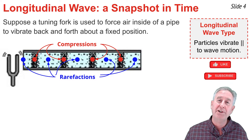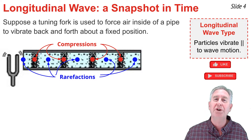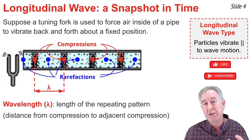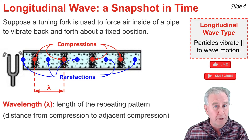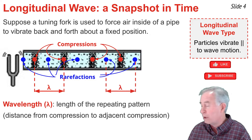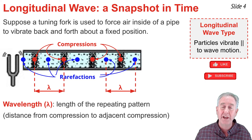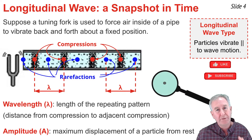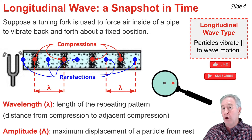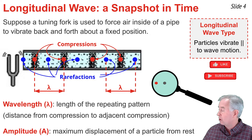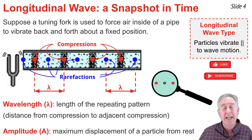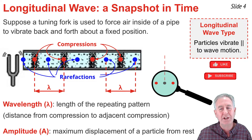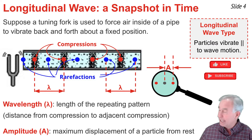It's this pattern of compressions and rarefactions that moves through the pipe. To determine the wavelength, measure the length of the repeating pattern — from one compression to the next adjacent compression, or from one rarefaction to the next. The amplitude is the maximum displacement a particle makes from its rest position. To find it, focus on a single particle vibrating from its rightmost to leftmost position, and measure from the rest position to either extreme.